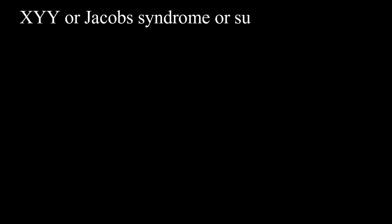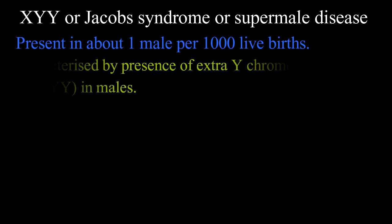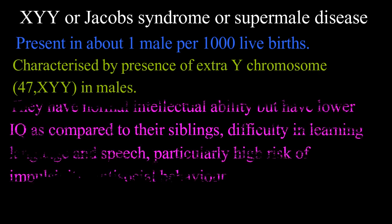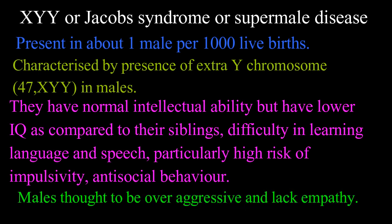XYY or Jacob's syndrome is a super male condition present in about 1 male per 1,000 live births. It is characterized by the presence of an extra Y chromosome, giving 47 chromosomes with XYY karyotype in males. They have normal intellectual ability but lower IQ compared to their siblings. Characteristics include difficulty in learning language and speech, particularly high risk of impulsivity and antisocial behavior. Males with Jacob's syndrome are thought to be overly aggressive and to lack empathy.